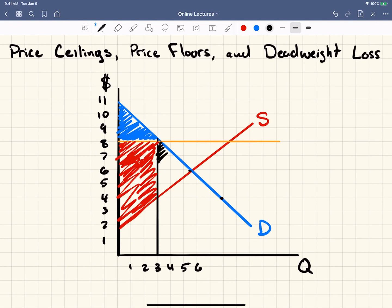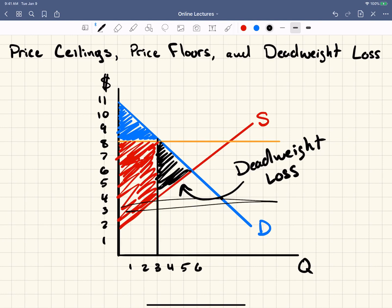So what do we call this whole space, this whole space where no transactions are happening, we call deadweight loss. And this is why price ceilings, which are down here and price floors, which are up here are bad things is because they create this deadweight loss where the market can't operate efficiently.